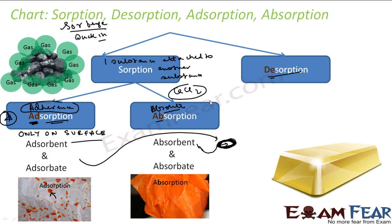To recap the chart: sorption is when one substance is attached to another. Desorption is the reverse — one substance is removed or released from another. Sorption has two types: adsorption, where the word comes from 'adhere' and it happens only at the surface; and absorption, which is absolute sorption — the substance penetrates the bulk. In this chapter, we will be talking mostly about adsorption.